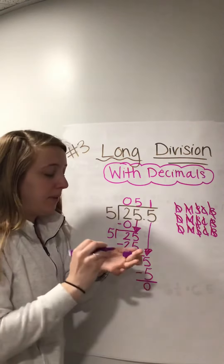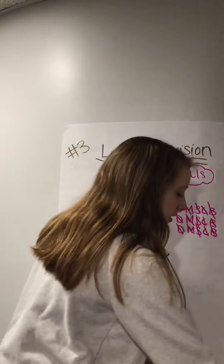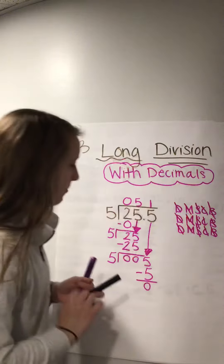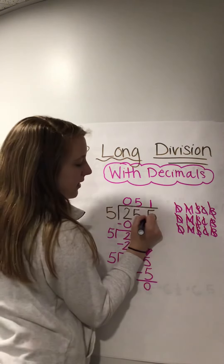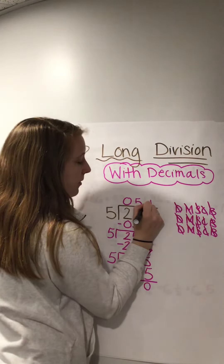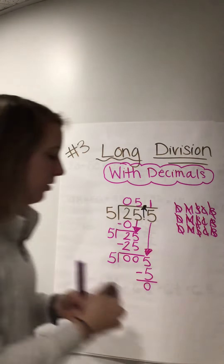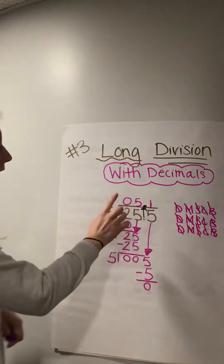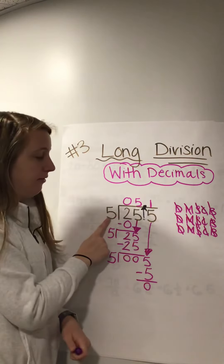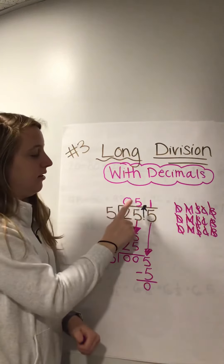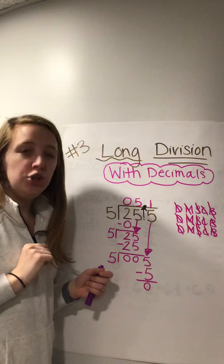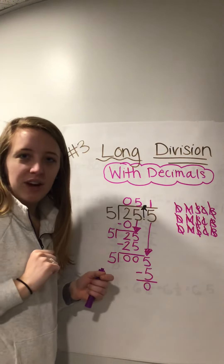But don't forget about the decimal at the end. When you are done, all you have to do — grab a different color here — is bring the decimal up exactly where it's from. Just bring it straight up. So now we can say that 25 and 5 tenths divided by 5 gives us 5 and 1 tenth. It's that easy, friends. You can do it. I believe in you. Have a great day, I'll see you soon.